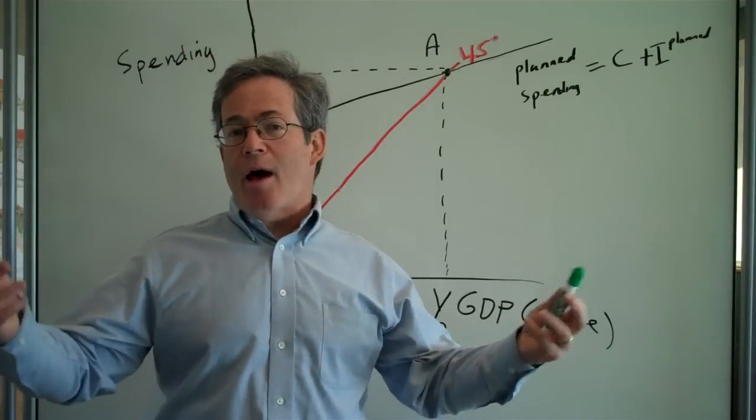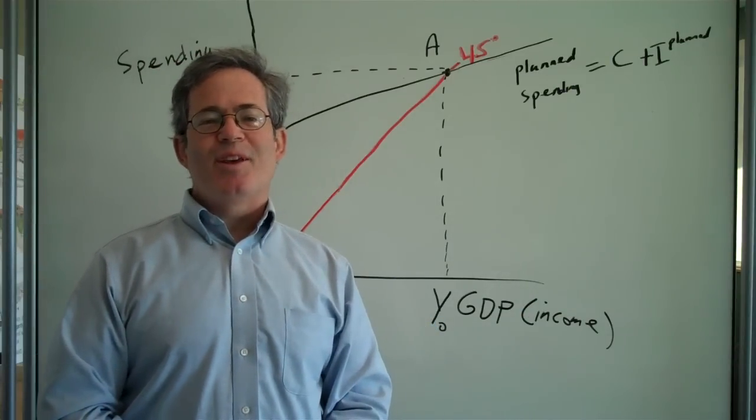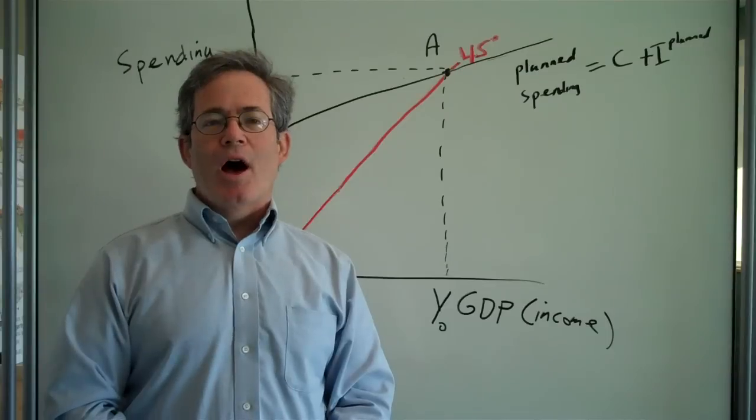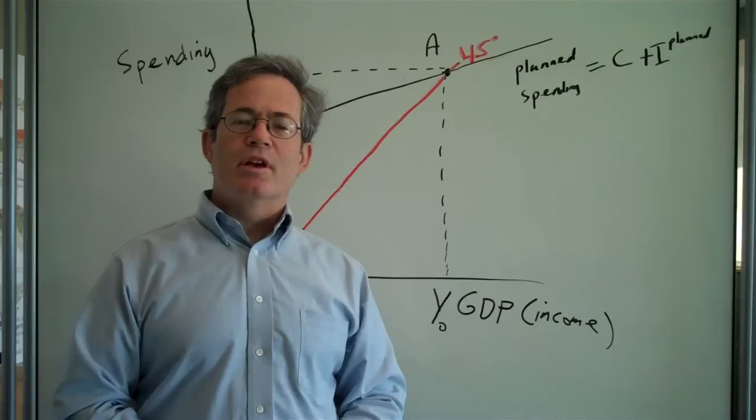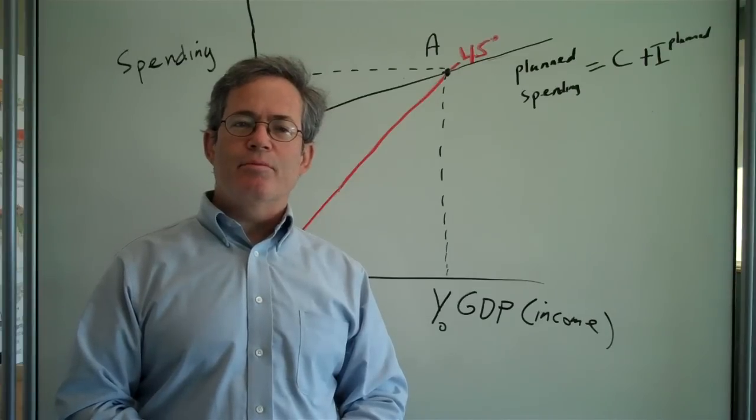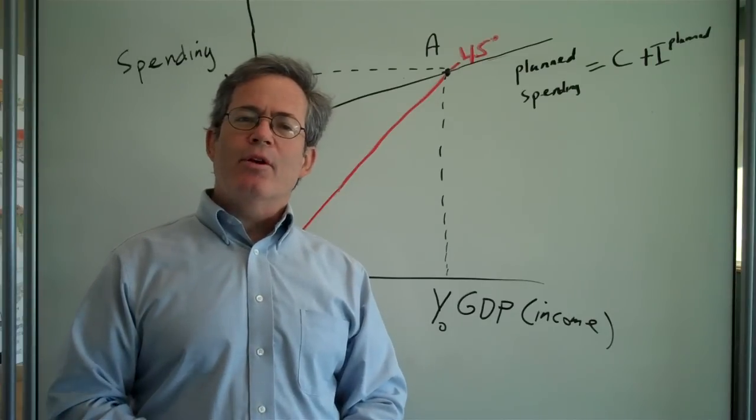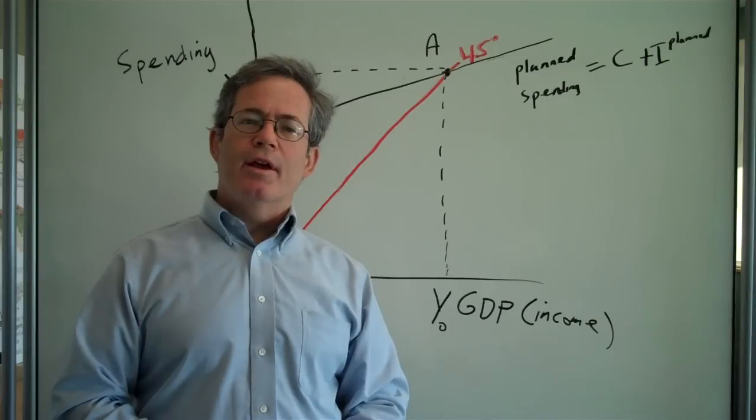And then all of a sudden, as happened in 2007-2008, the economy runs into a big mess, and demand declines, the financial system seizes up, and so aggregate demand or planned spending falls.